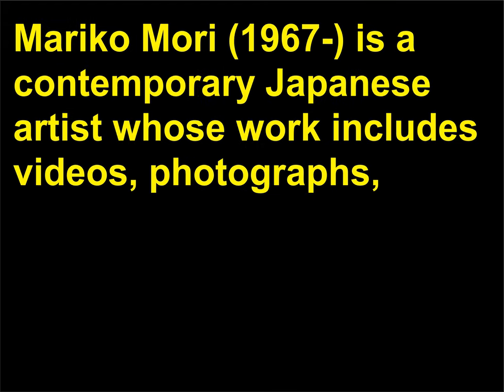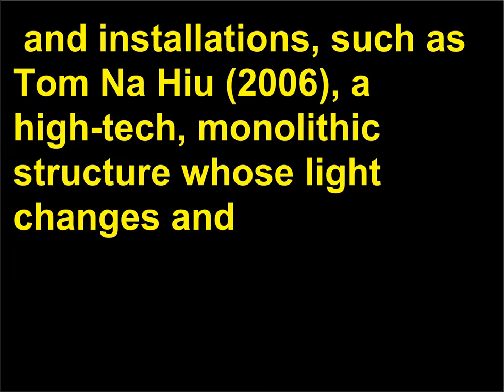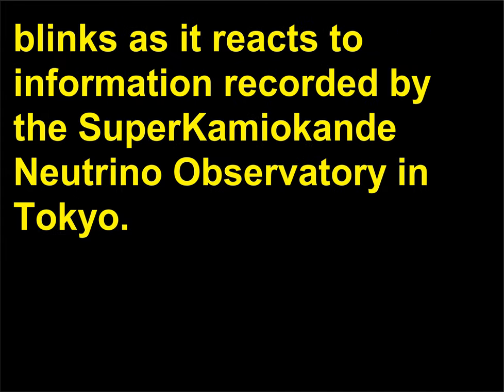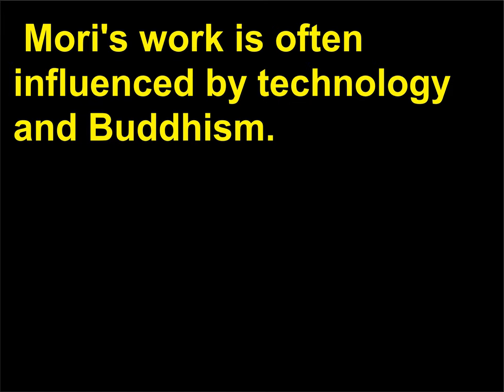Who is Mariko Mori? Mariko Mori (born 1967) is a contemporary Japanese artist whose work includes videos, photographs, and installations, such as Tom Na H-iu (2006), a high-tech monolithic structure whose light changes and blinks as it reacts to information recorded by the Super-Kamiokande Neutrino Observatory in Tokyo. Mori's work is often influenced by technology and Buddhism.